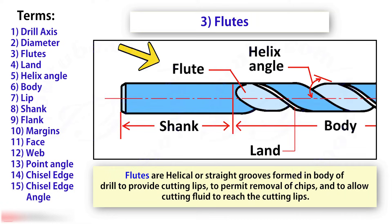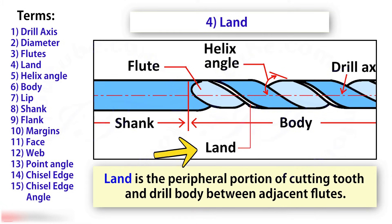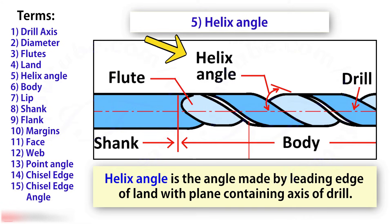Flutes are helical or straight grooves formed in the body of the drill to provide cutting lips, to permit removal of chips, and to allow cutting fluid to reach the cutting lips. Land is the peripheral portion of the cutting tooth and drill body between adjacent flutes. Helix angle is the angle made by the leading edge of the land with the plane containing the axis of the drill.